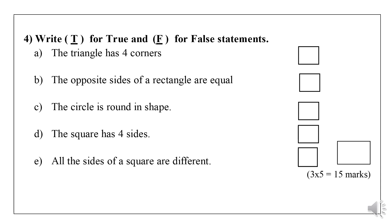A. The triangle has four corners. B. The opposite sides of a rectangle are equal. C. The circle is round in shape. D. The square has four sides.